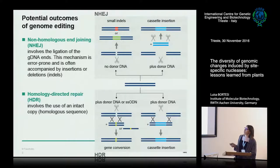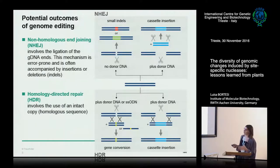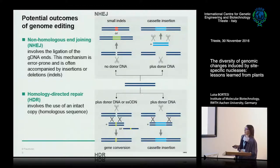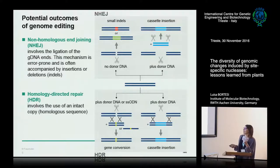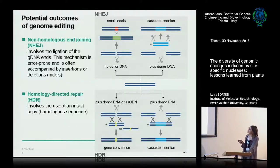The other pathway is called homology-directed repair, which is very rare in plants especially. This happens when you introduce a donor template that has homology regions adjacent to the break. If you have a small mutation in this template, it can be introduced — this is what we call genome editing sensu strictu, where you can mutate a single base, also called gene conversion. If you have homology regions flanking your donor, you can also introduce completely new genes or a whole cassette of new DNA.